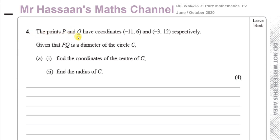The points P and Q have coordinates minus 11, 6 and minus 3, 12 respectively. Given that PQ is a diameter of the circle C, we've got to find the coordinates of the center of C and find the radius of C.